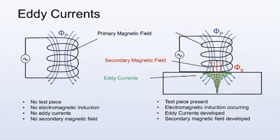Eddy currents alternate in the material and always flow in the path of least resistance.